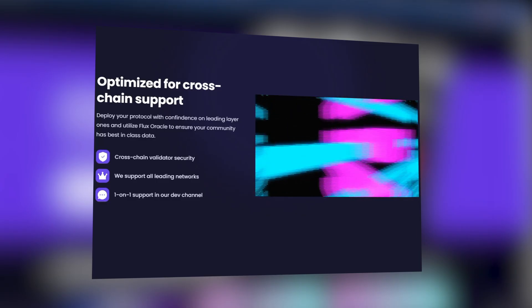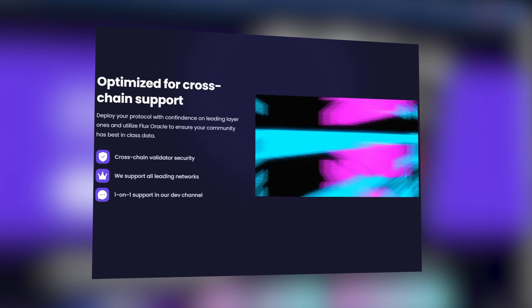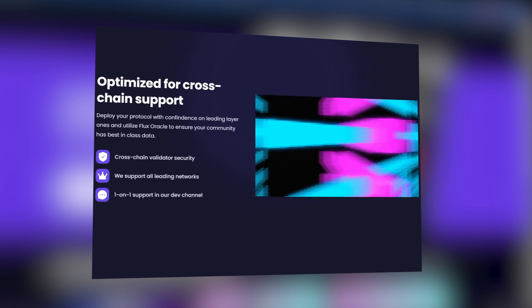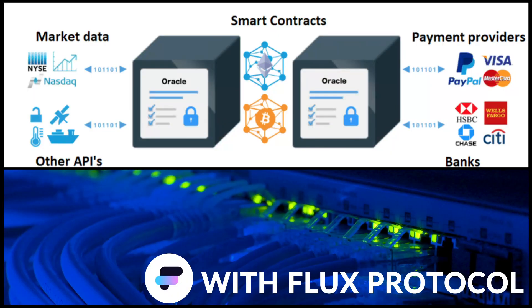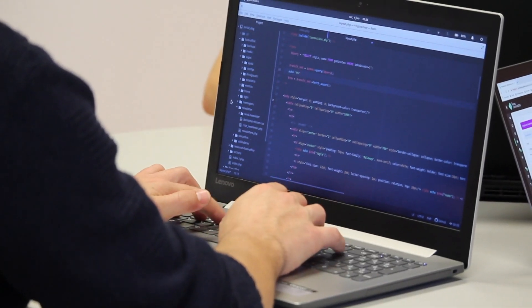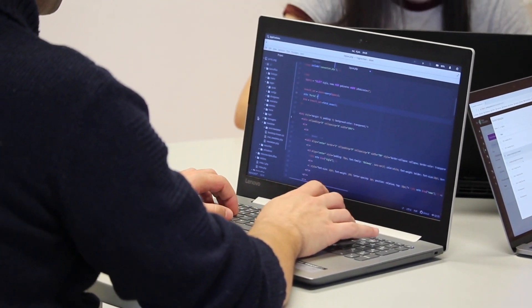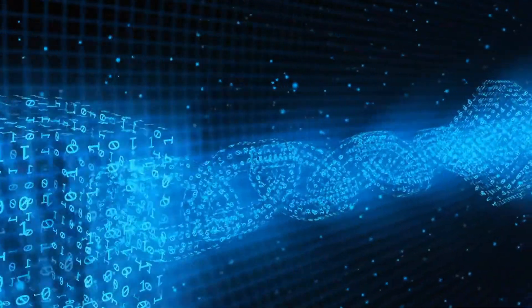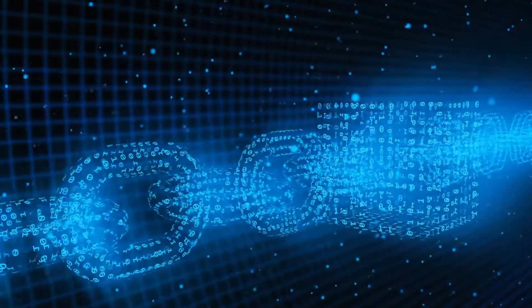Without Flux Protocol, smart contracts would have to rely only on data already in their networks, which would severely limit their capabilities. The widespread use of oracles brings us closer to a future in which blockchain can play a more important role in everyday life. But along the way, Flux Protocol developers have a host of issues to address to improve their security and efficiency.